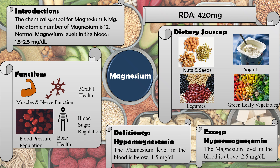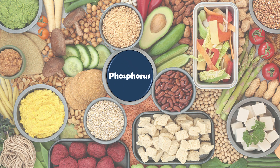If magnesium levels exceed the normal value of 2.5 mg/dL, the condition is known as hypermagnesemia. Both deficiency and excess may lead to different consequences and disorders in the body.